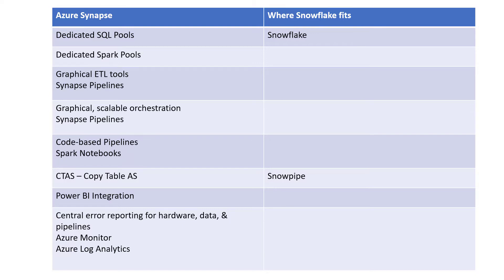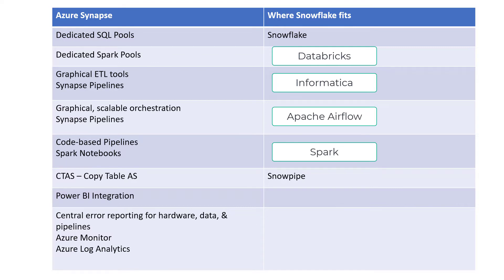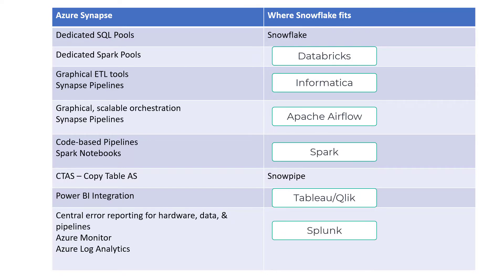But everything else, Snowflake doesn't have an answer for. For instance, if you wanted to do Spark pools, you'd probably have to use something like Databricks. If you wanted graphical ETL pipelines, you'd need Informatica. If you needed notebooks, that might be Spark. If you needed some type of visualization tool, in the Synapse ecosystem you'd use Power BI integration, while in Snowflake you'd use Tableau, Looker, or QuickSight. And there's nothing that will do central error reporting like Azure Monitor or Azure Log Analytics — you'd have to use something like Splunk, which is difficult to integrate and can be very expensive and hard to maintain.